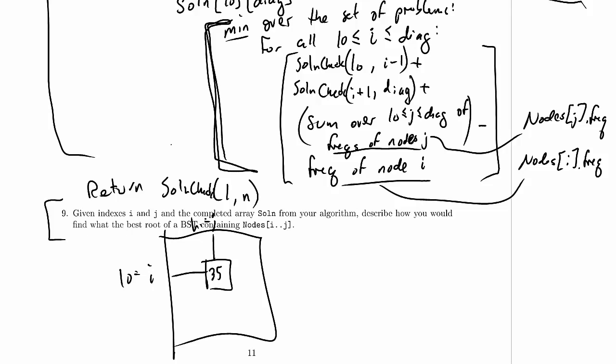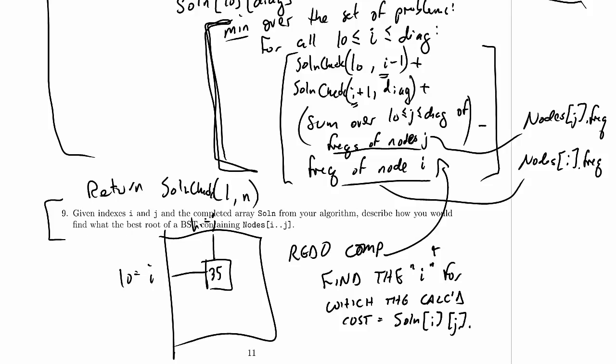But basically all we do is redo the computation up here and find the i value for which the calculated cost is equal to solution ij. And if there's multiple, it doesn't matter which one we pick, they all give the same cost.